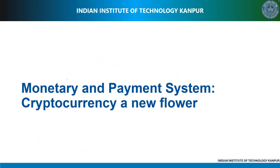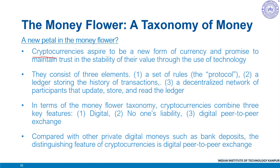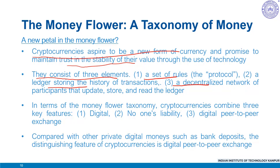In this video, we'll discuss the rise of cryptocurrency as a new flower in our money flower taxonomy. Cryptocurrencies aspire to be a new form of currency and promise to maintain trust in the stability of their value through the use of technology. They consist of three key elements: a set of rules or protocol specifying how participants can transact; a ledger storing the history of transactions; and a decentralized network of participants that update, store and read the ledger following the rules of the protocol.